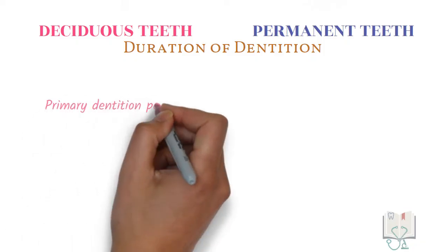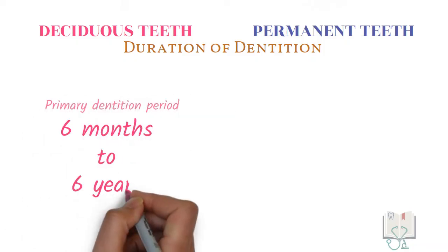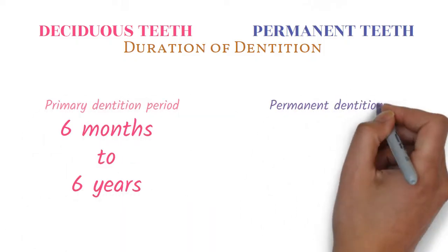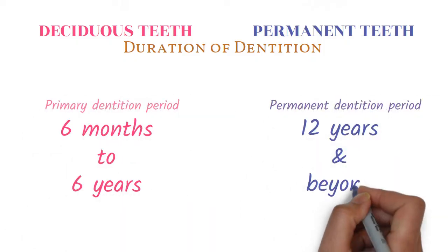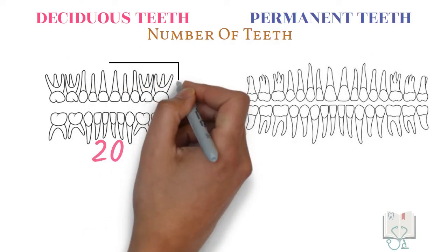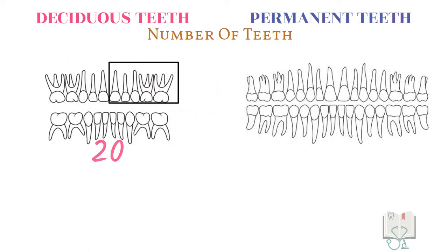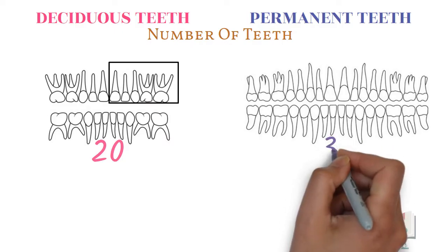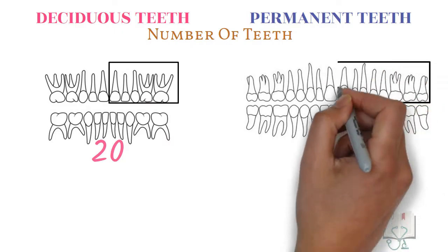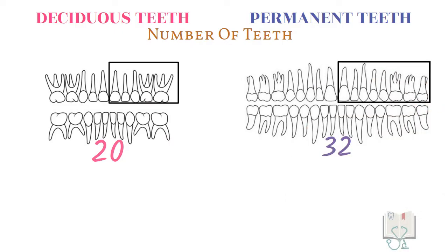The duration of primary dentition is from 6 months to 6 years, whereas the period of permanent dentition is 12 years and beyond. Deciduous teeth are only 20 in number, 5 in each quadrant, whereas permanent teeth are 32 in number, 8 in each quadrant.